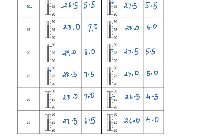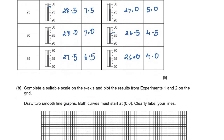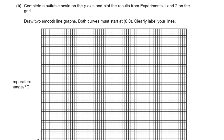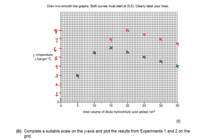The main point is that we should write temperatures to one decimal place because our thermometer shows readings to one decimal place. For the next part, complete a suitable scale on the y-axis and plot the results for experiments 1 and 2 on the grid. Draw two smooth line graphs — both curves must start at 0,0. Clearly label your lines. I am plotting the points for both experiments now.